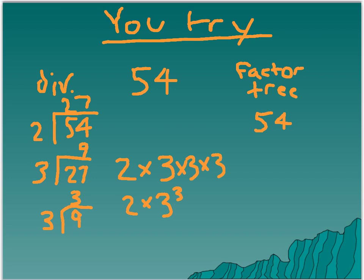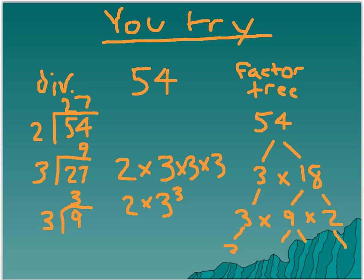For our factor tree, let's look at it a different way. We can choose the fact 3 times 18. 3 comes straight down because it's prime. 18 breaks down into 9 times 2. 2 comes straight down because it's prime. And 9 is 3 times 3. So it's 3 times 3 times 3, or 3 cubed, times 2. That's the prime factorization with the factor tree for 54. Your answer might have looked a little different if you chose a different starting fact, but the prime factorization in either method is going to be the same.